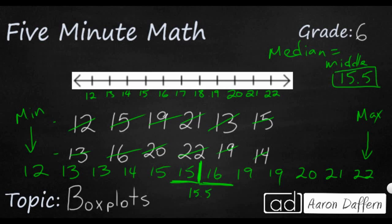Now that we have our minimum, we have our median, and we have our maximum, we only need two more pieces of information before we can plot this on our number line.